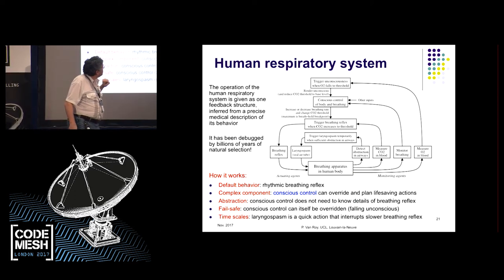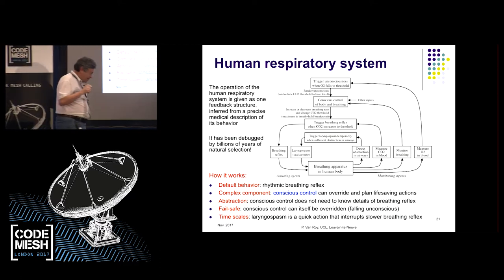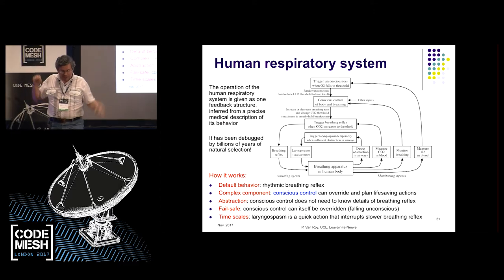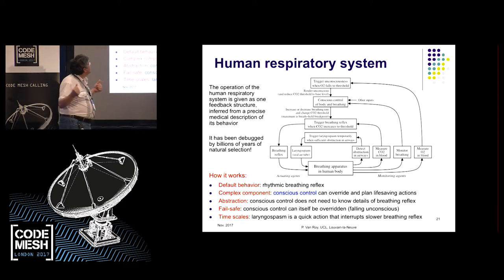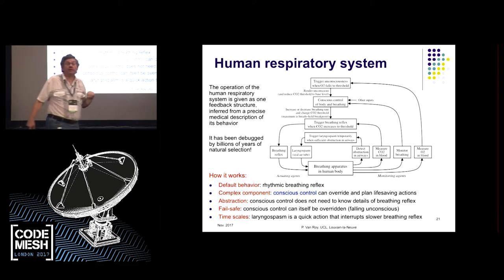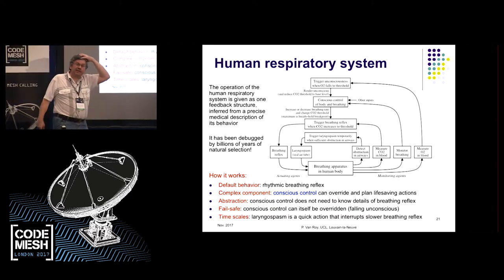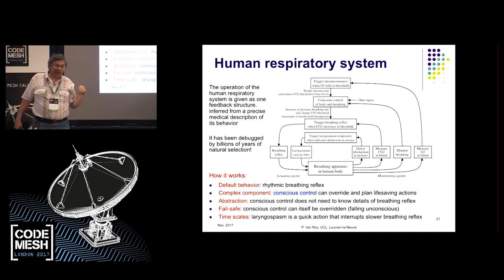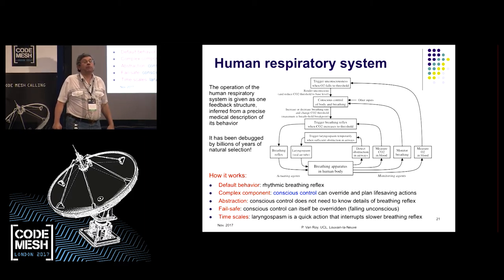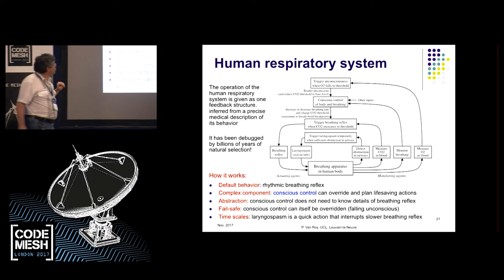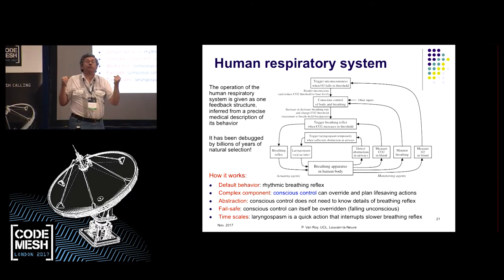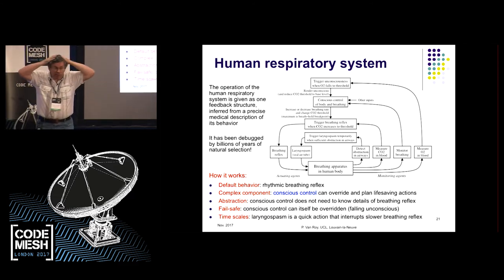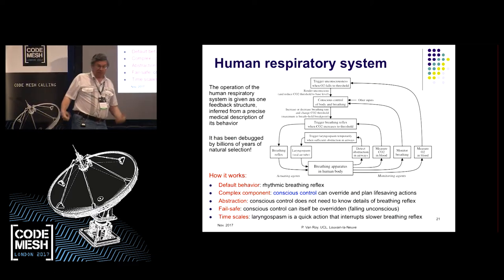My brain figures out a very sophisticated planning strategy to get out of that car and back onto shore where there's air. In the meantime, I suppress my breathing reflex by conscious control. Usually, conscious control doesn't care about breathing — but in certain cases it can take control. Whenever it decides to take control, it can take control, and all the massive power of 100 billion neurons will compute my best chance of saving my life.